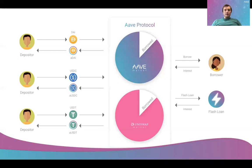In essence, these reserves are always formed so that there is always more liquidity available than borrowed, which practically means that you could deposit DAI or USDC today and then withdraw that amount from the protocol. We also have so-called interest-bearing tokens. When you deposit DAI, you get aDAI in return, and this aDAI practically represents the balance that you deposited into the protocol.